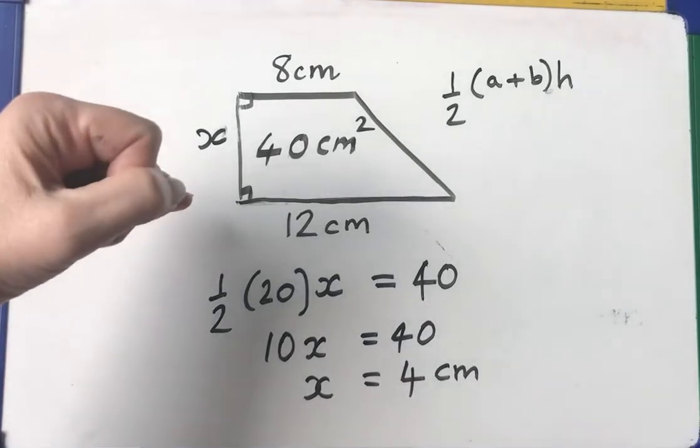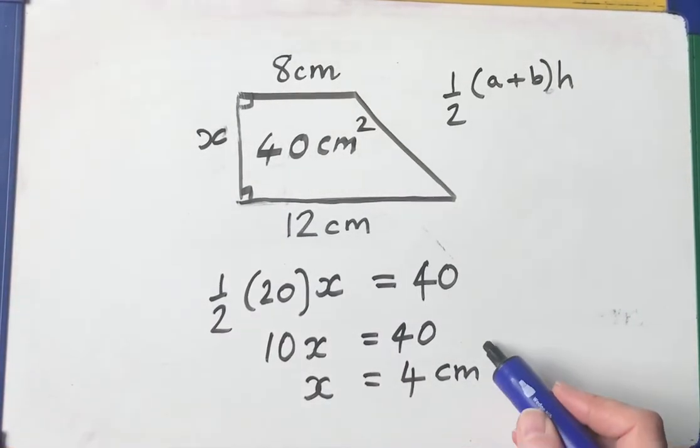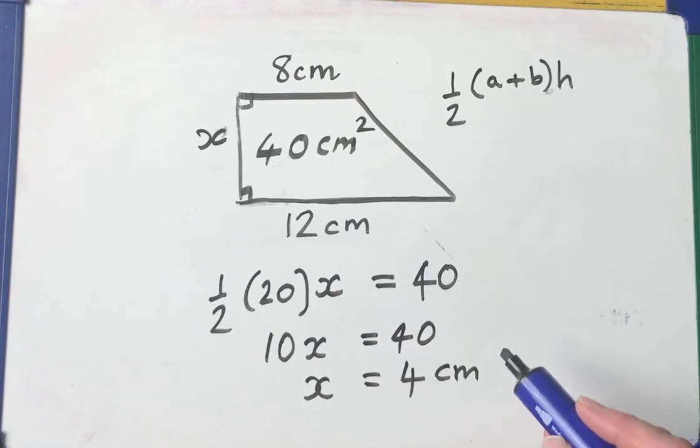Now remember, we're finding a length, not the area. So it's not 4 centimeters squared. That's really irritating when people mix up their areas with their lengths. Make sure you get your units right. 4 centimeters.